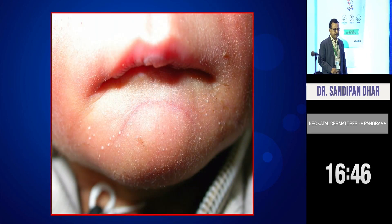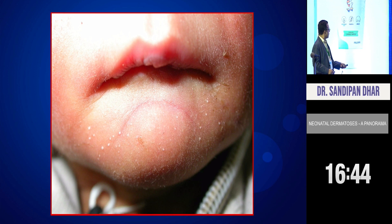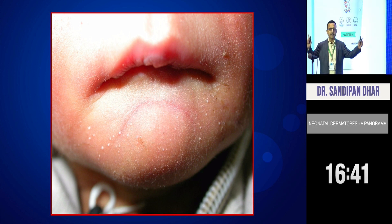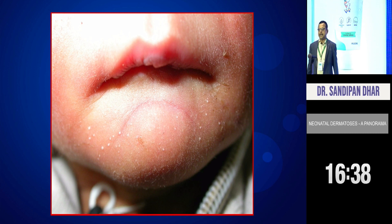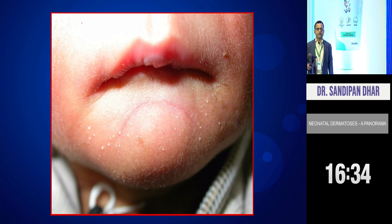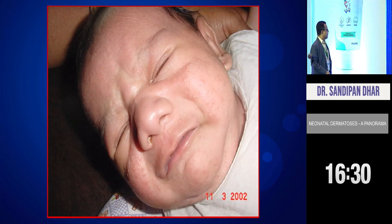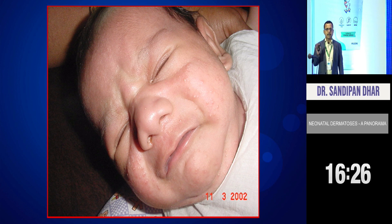What are these? Neonatal milia. So here also the condition resolves within 2 to 3 months by and large. It can look like this. The most important thing is counseling, counseling, and counseling — this is very, very important.